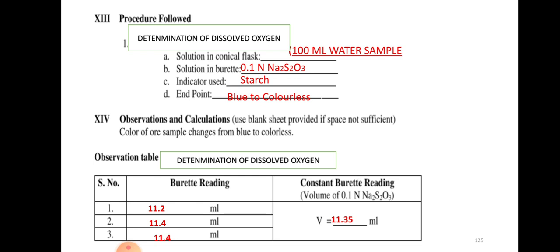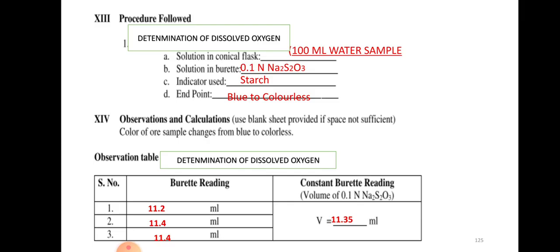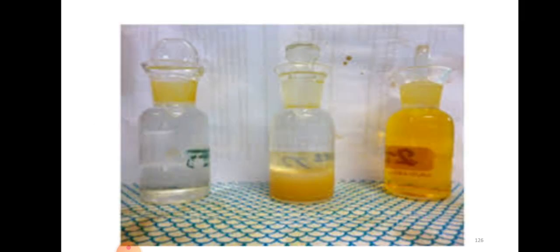This is called the procedure. And whatever the reading we are getting when the color changes blue to colorless we are going to note down. I am considering 3 readings and we are going to take an average as a constant burette reading. See, initially when we are taking a water sample, when we are adding manganese sulfate and alkaline azide, it is going to form a precipitate. And when we are going to add H2SO4, solution becomes clear. We are going to keep for 15 minutes and this solution we are using for the titration.